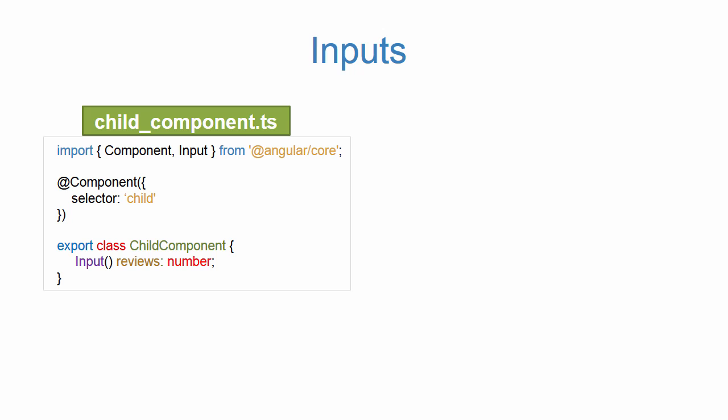So inside of our child component, we first need to import the Input decorator. Then inside of our class, we invoke our input, and then we create a property of whatever we want — in this case named 'reviews'. You can think of it like a variable that's going to represent some value we get from the parent. And then we need to define its type, which in this case is a number.